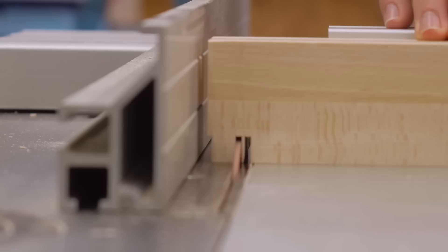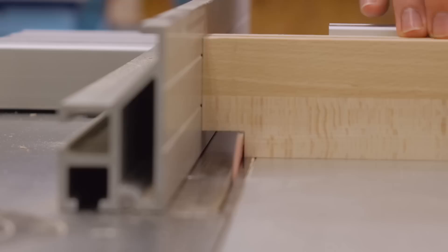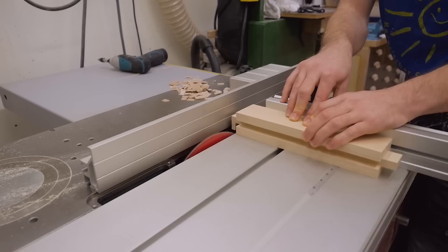Then I make a series of cuts, break the little pieces away, and graze over the blade to clean the surface. Doing that from all sides makes the tenon perfectly centered.